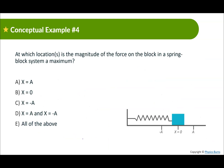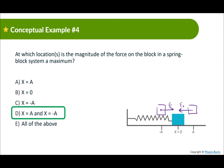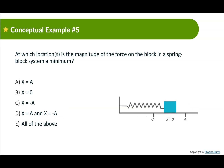At which location is the magnitude of the force on the block in a block-spring system at a maximum? When the block is all the way at the amplitude, that's when the spring pushes or pulls on it the most. So that's when the force and the acceleration are greatest — at the amplitude. At which location is the force a minimum? That's when the spring is not pushing nor pulling — at the equilibrium position. This is also where it's going the fastest, but the net force and net acceleration are both zero.